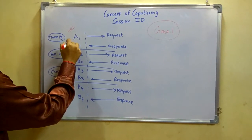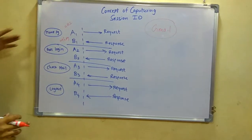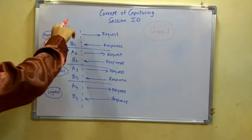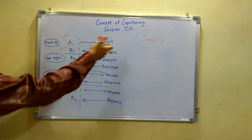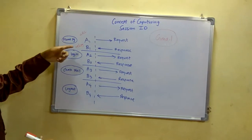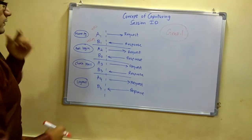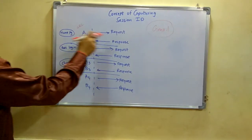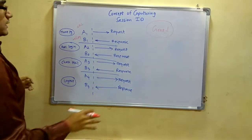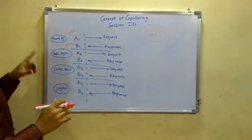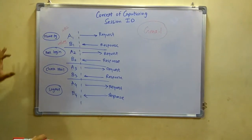You will be giving a URL and in the response you will be getting that web page — the home page. Now in this action there will be no session ID generated. Session ID would be generated in the post-login session.